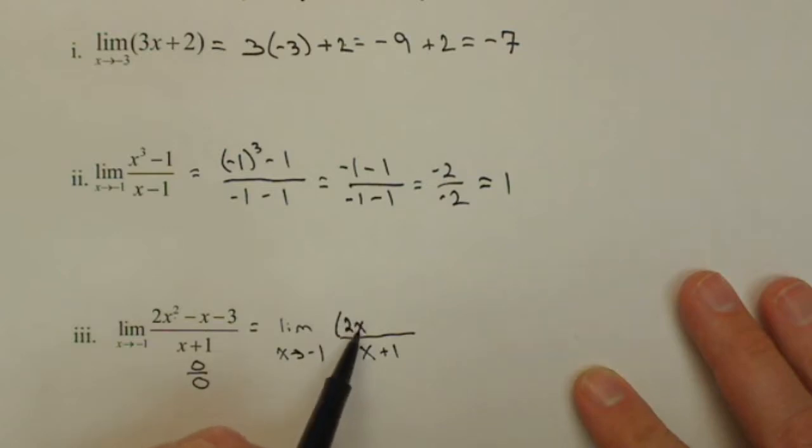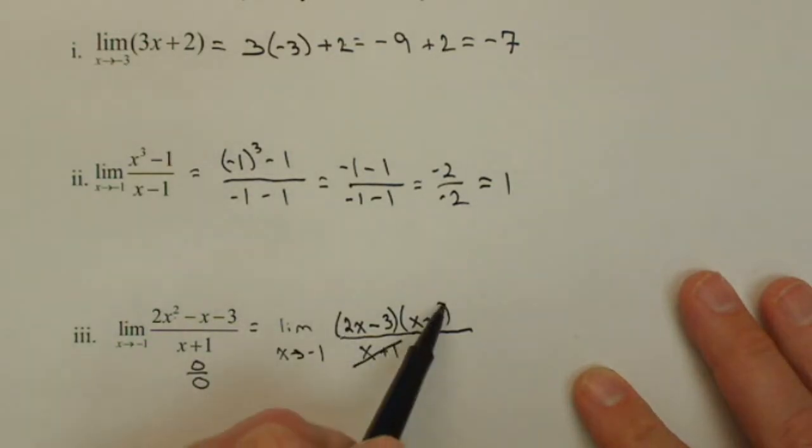So if we go to factor this, it'll factor into 2x minus 3 times x plus 1. If we check this, there's our 2x squared, there's our negative 3, we get a minus 3x, a positive 2x gives us a negative x, and these will cancel.